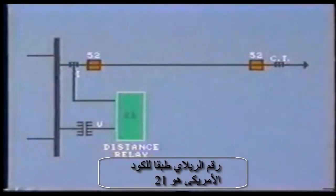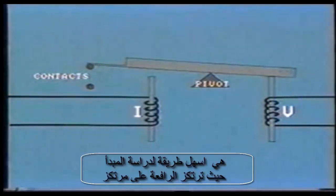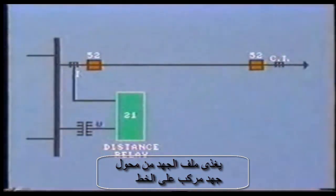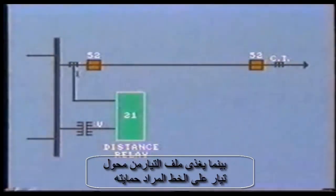The device number for the distance relay is number 21. The earlier types of distance relays worked on the balanced beam principle, and this is the easiest way to study the concept. The beam is pivoted like a seesaw with voltage and current coils at opposing ends. The voltage coil is fed from the voltage transformer on the line, or more usually on the bus feeding the line, while the current coil is fed from the current transformer on the protected line.